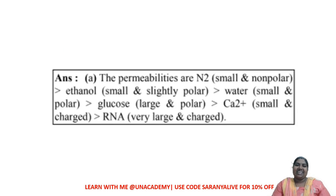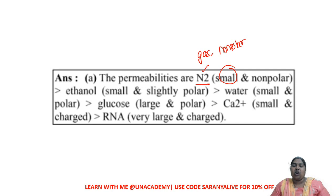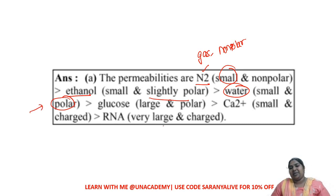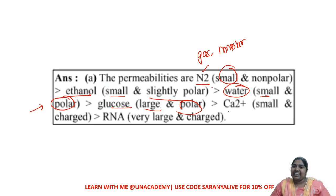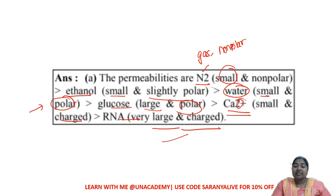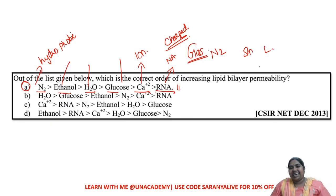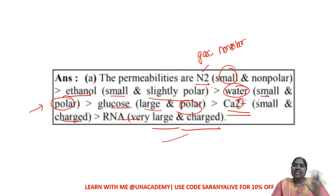Nitrogen is first because it is a gas — highly non-polar and very small. Next comes ethanol, which is slightly polar but better than water, which is highly polar. Glucose is large in size and highly polar, so it cannot pass through. Ions are highly charged (2+ positively charged), and RNA is very large and charged. If two molecules differ in size, the larger cannot pass; if polar vs non-polar, only the non-polar can pass through.